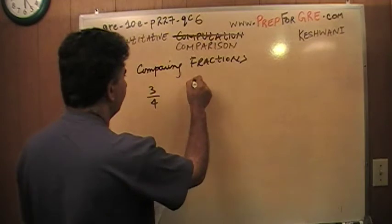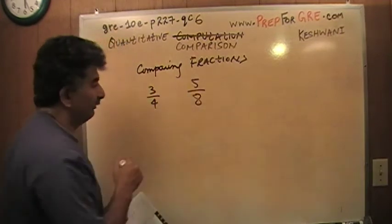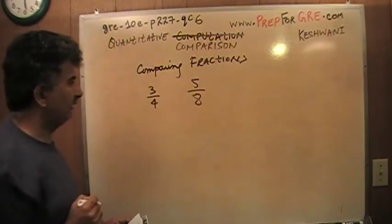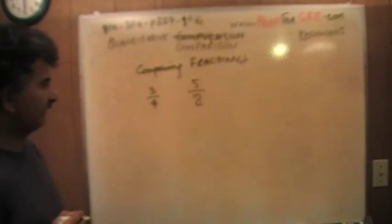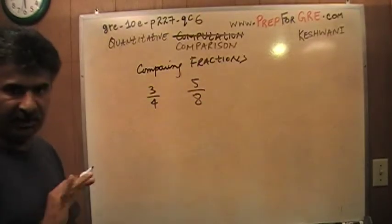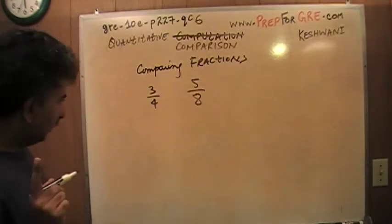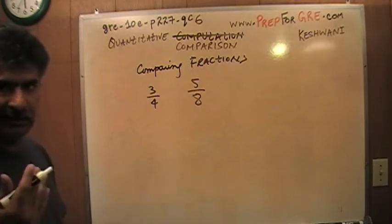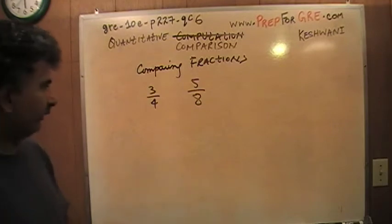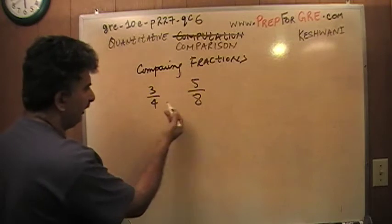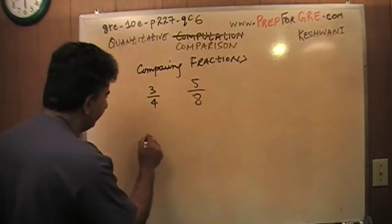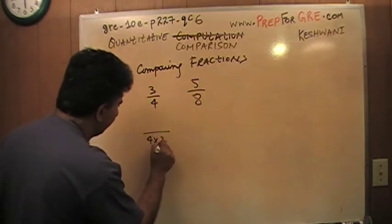Of course, this is a very simple example because, as you can see, 3/4 is 75% and this is less than 75%, which would have to be 62.5%. But let's just pretend that we do not know. The one way, the proper way, the correct way, the classical way, the traditional way, the orthodox way, would be to find a common denominator.